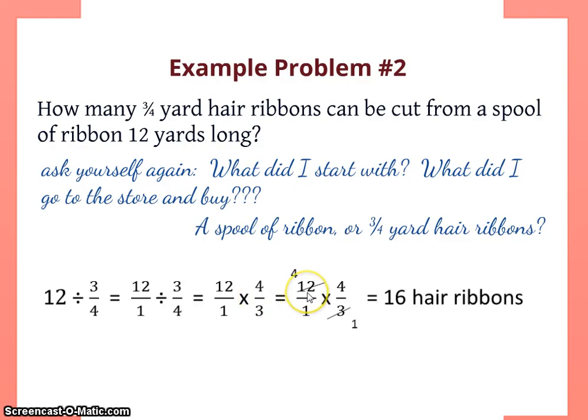Then I'm going to change to a multiplication problem and flip the second term, so the 3 fourths becomes 4 over 3. Then I'm going to cross cancel. 3 is a factor of 12, so I can divide 3 out of both of these. 12 divided by 3 is 4, 3 divided by 3 is 1. So then I just multiply: 4 times 4 equals 16 and I have a 1 on the bottom. So I'm going to end up with 16 hair ribbons.